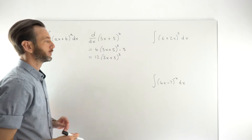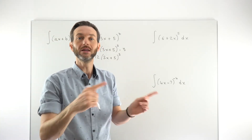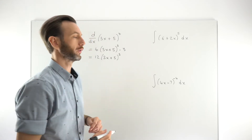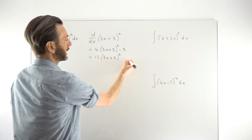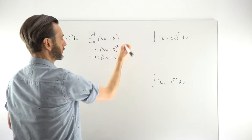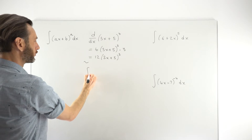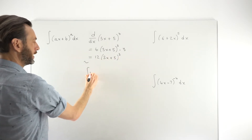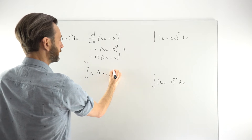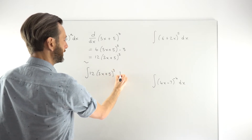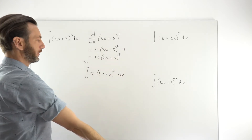That is the derivative of that composite function. Now, because derivatives and anti-derivatives are inverses of each other, if we integrate the result we should get back to where we started. So the integral of 12(3x + 5)³ dx should take us back to (3x + 5)⁴.